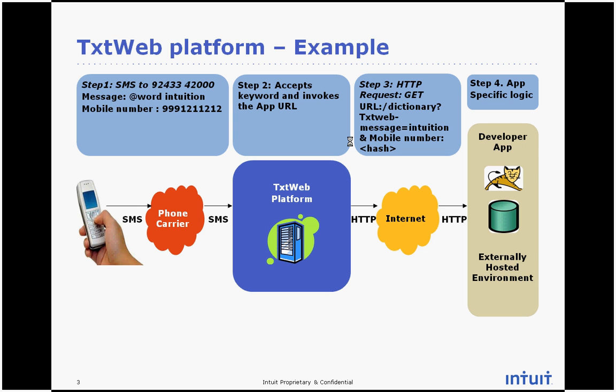Step number four: when the application gets the request, it needs to get the actual word that the lookup is desired for — in this case, the word being "intusion." It looks that up, goes to its database, looks up the meaning, and figures out what the corresponding meaning is.